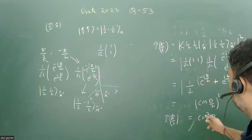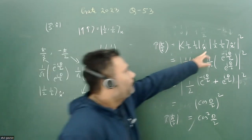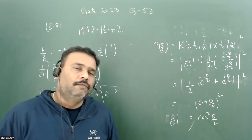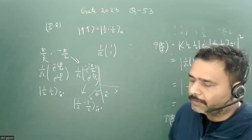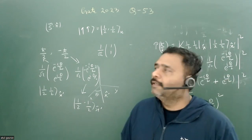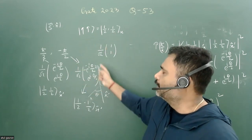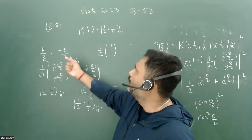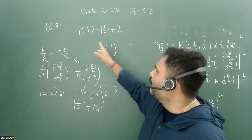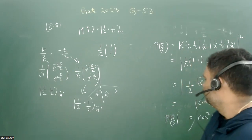The probability of measuring +ℏ/2 is cos²(θ/2). If you take the other eigenstate instead, you get sin²(θ/2). Since the exam only specifies the up state without clarifying which initial state, the best answer among the options is cos²(θ/2), obtained by projecting along the x̂' direction.